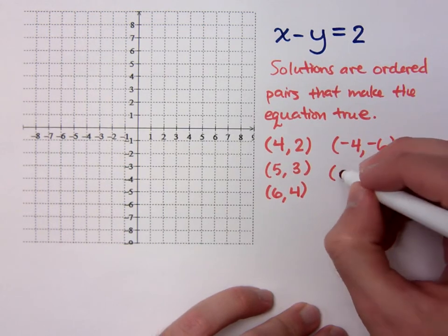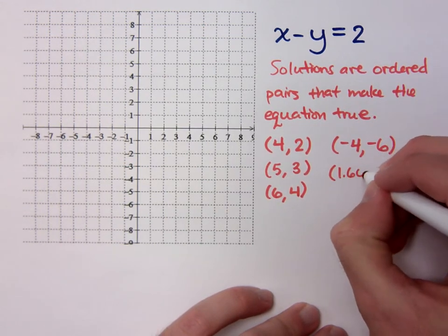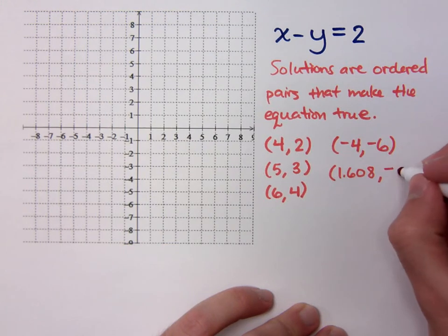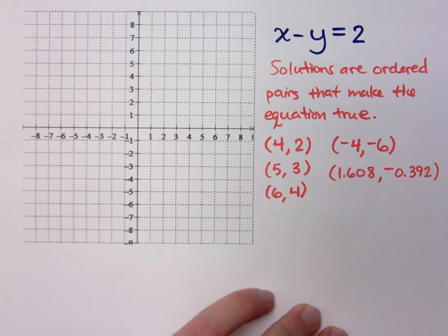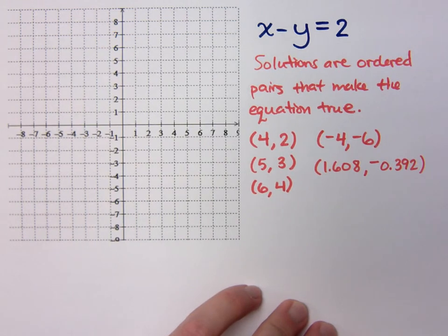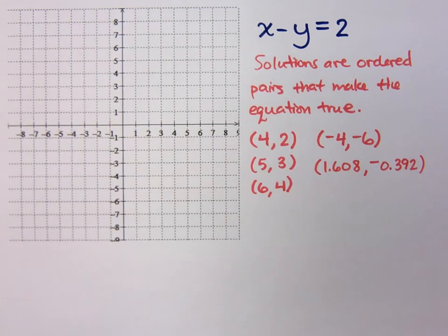Or, what if I have 1.608 and negative 0.392? Wouldn't that guy work too? You're just going to say, yes, sure. Why not, right? If you plug that in up here, it should give you 2 as long as I've done the math correctly.